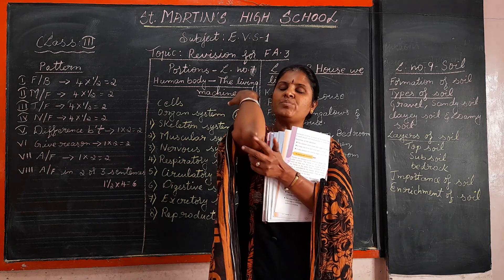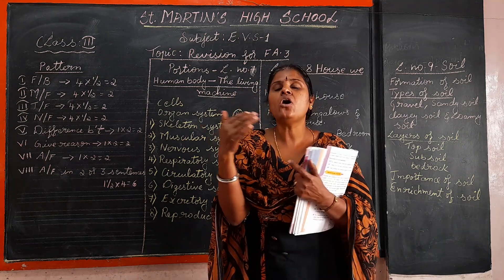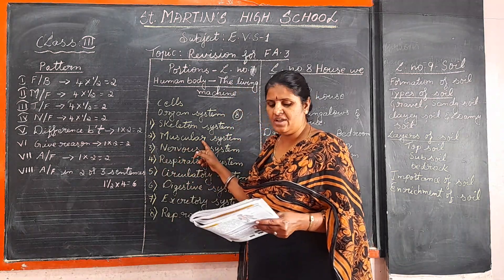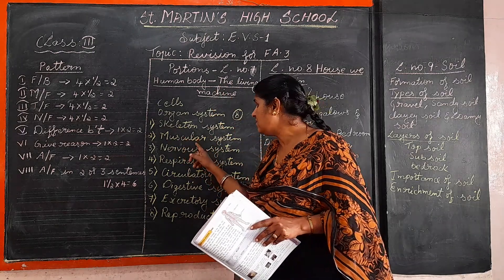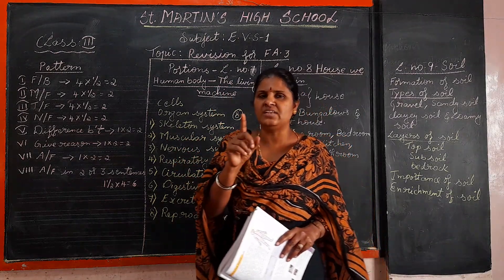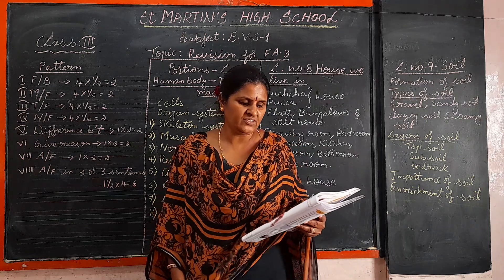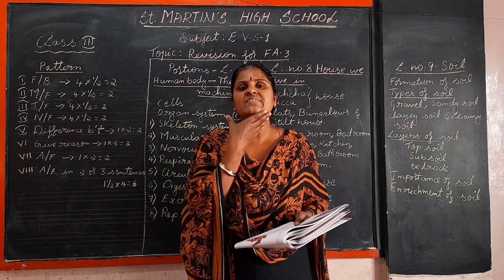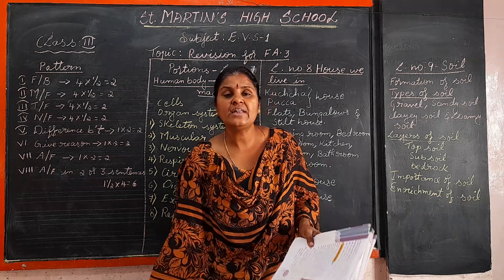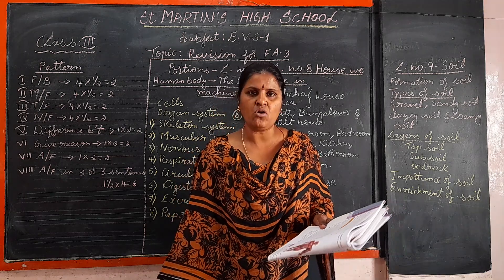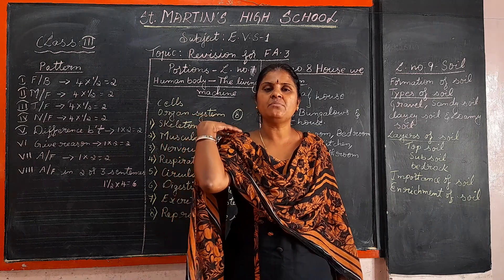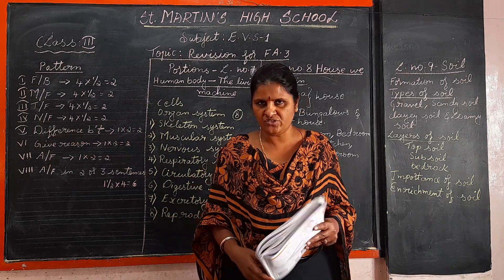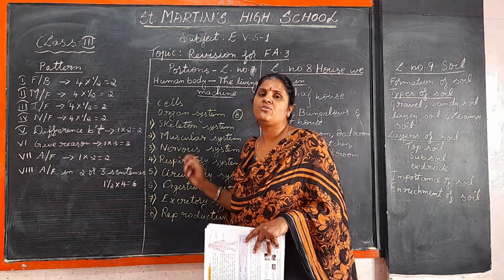The part where we fold our limbs is called a joint. Two or more bones joined together are called joints. In the muscular system we have 600 muscles. Muscles help in smiling, laughing, kicking, jumping, and walking.